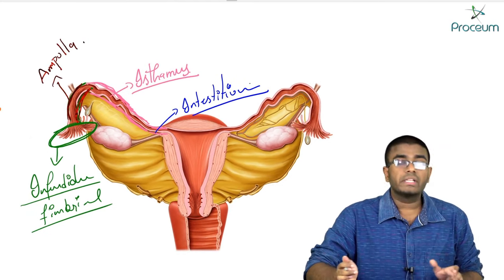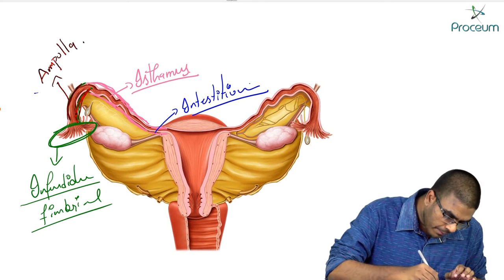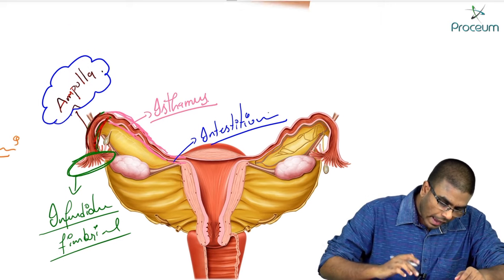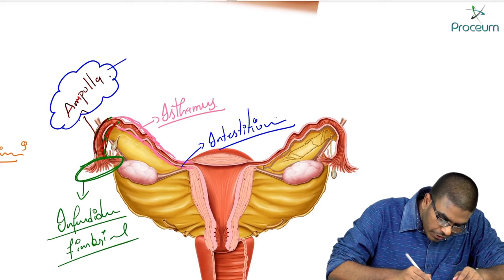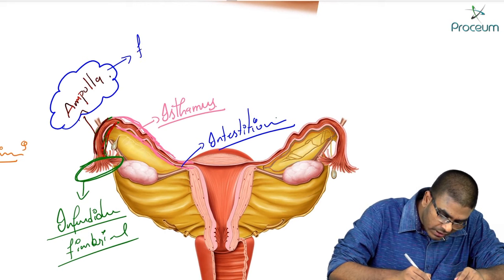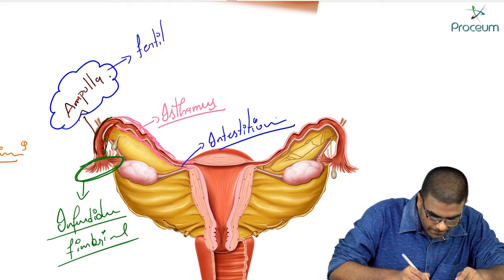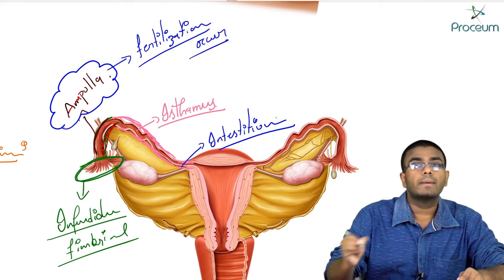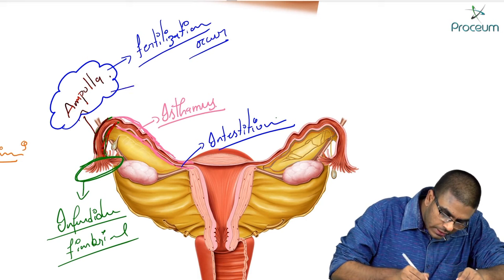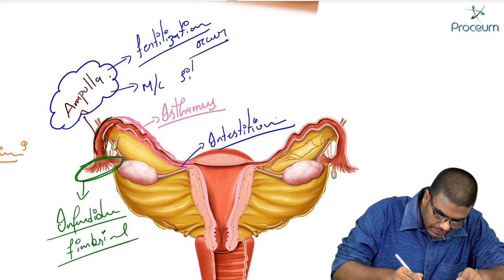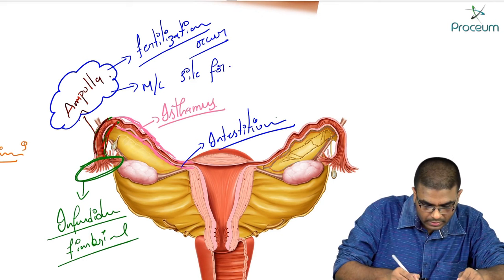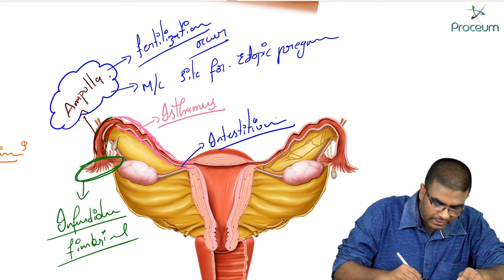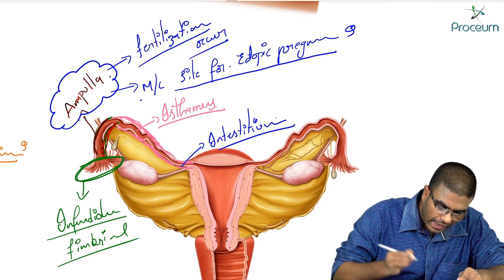What are the important MCQ points you need to keep in mind for exams? The ampullary part of the fallopian tube is the place where fertilization occurs. Also, the ampulla is the most common site of ectopic pregnancy.